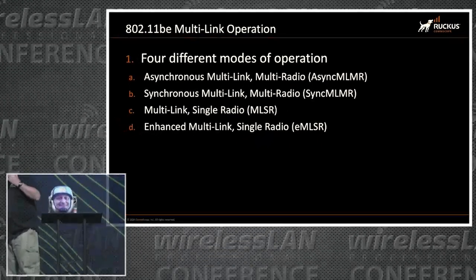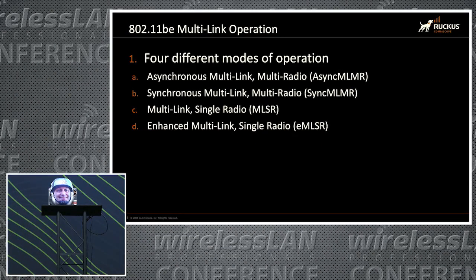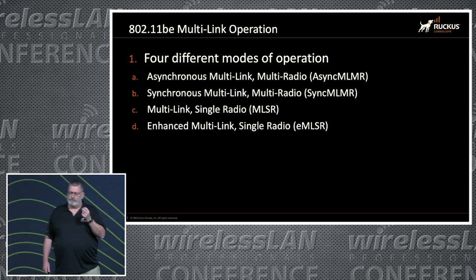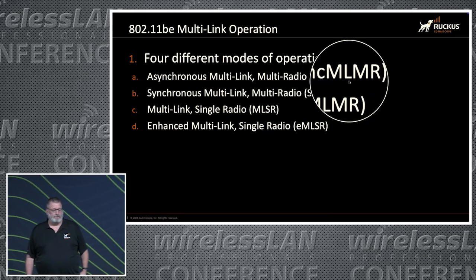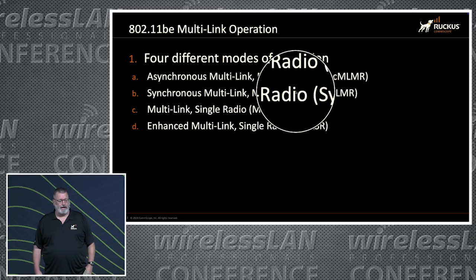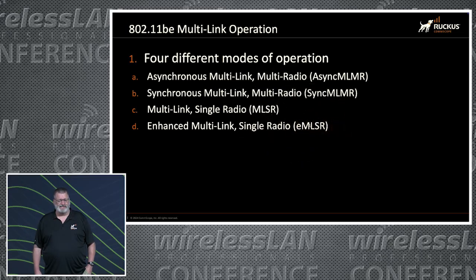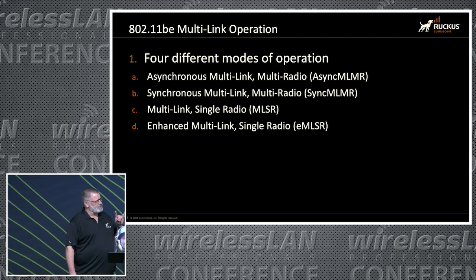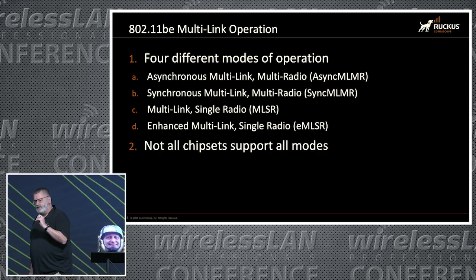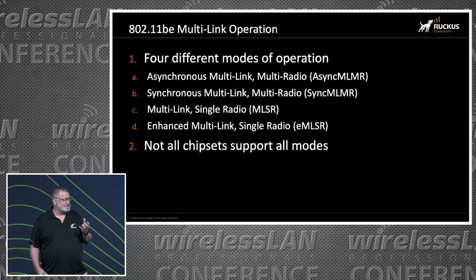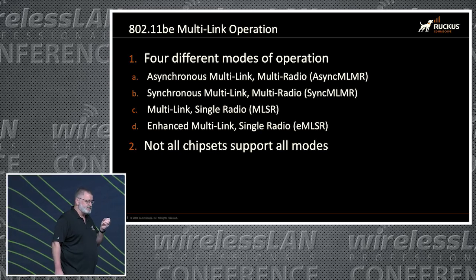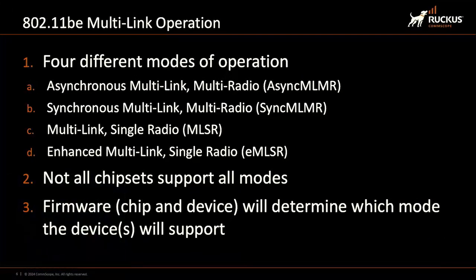The four modes we're going to go through very quickly — the biggest thing I want to point out is how do you tell the difference? There's really only two that you need to pay attention to. One is the multi-link multi-radio, and there's two different versions of that. The multi-link single radio — even though there are two, it's really just one. Biggest thing to emphasize: not all chipsets from devices, APs, and clients will support all the modes. And as with everything for MLO, this is driven by the client. I can offer it from an AP, I can set it up and configure it, but it's still up to the client device to actually trigger and use it.